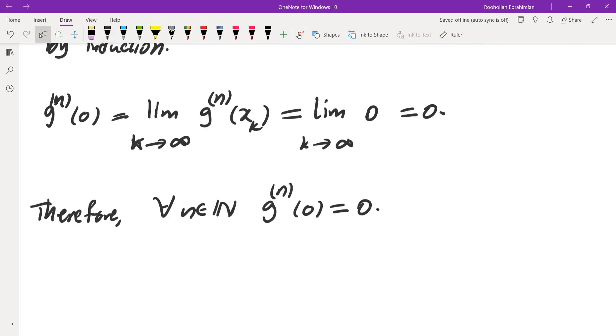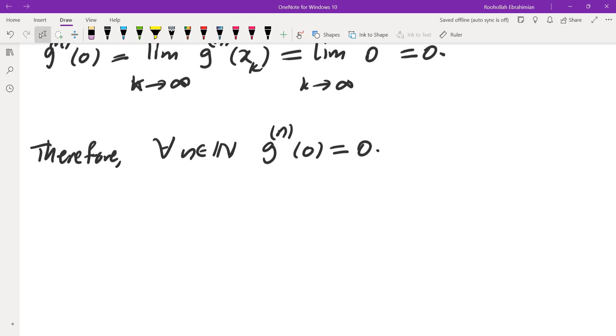Now we are going to have to relate that to the derivative of f. So what we have is this. fn of 0 minus the nth derivative of 1 over 1 plus x squared at x equals 0 is equal to 0.